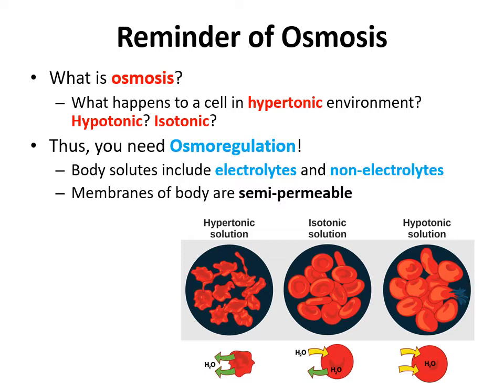The opposite is hypotonic, where you have low salt around the cell. A memory trick: think 'hippo' for hypo, because those cells take in water, swell up, and get big like a hippo — they might even burst. The last scenario is isotonic, very important for nursing and medical fields, meaning there's a balance: water leaving the cell equals water coming in, with no major gradient between salt inside and outside the cell.